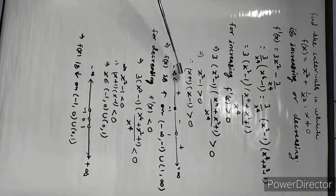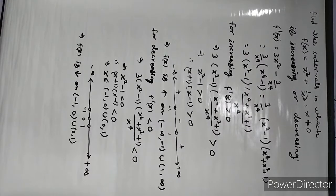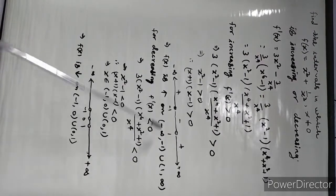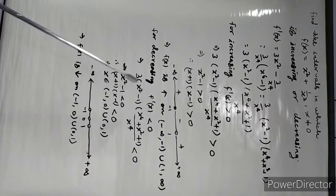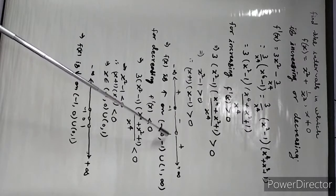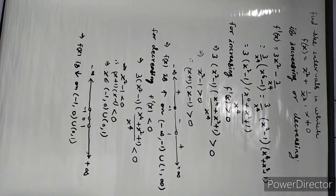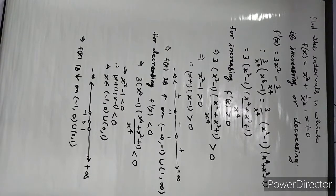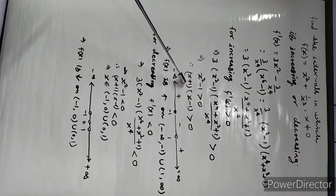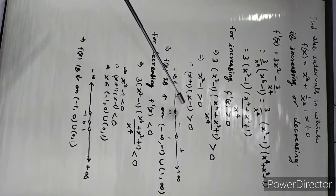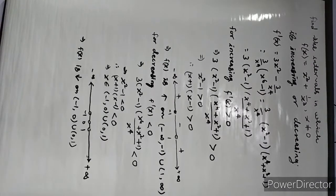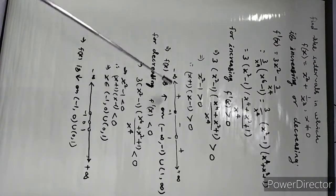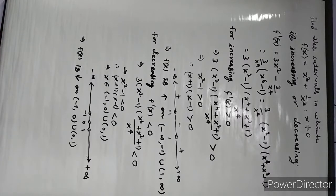Therefore (x + 1)(x - 1) > 0. Now take the real number line with open intervals at -1 and +1. If you take a point between -∞ and -1, suppose x = -3, then (-3 + 1)(-3 - 1) = (-2)(-4) = positive. So f'(x) > 0 in the interval (-∞, -1).